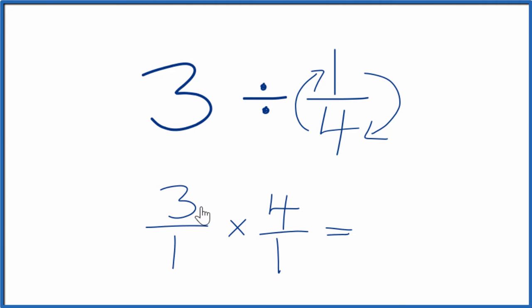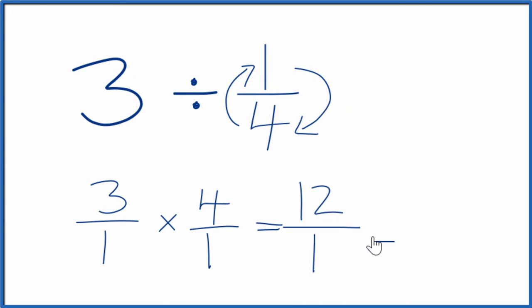And now it's just multiplication. Three times four is 12. One times one is one. And we have 12 over one, which is just 12. So three divided by one-fourth, that equals 12.